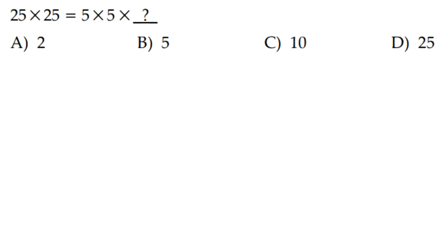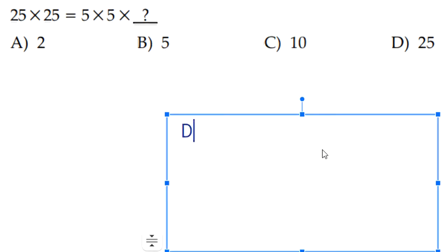Next question: 25 times 25 equals 5 times 5 times blank. So, if you notice, 5 times 5 equals 25. So, 25 gets cancelled out on both sides, and the leftover is 25 on that side. So if we bring that 25 over to this side, we bring it over here, it would equal the same. So our answer is D.